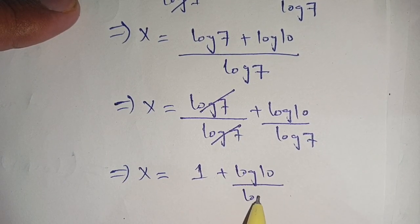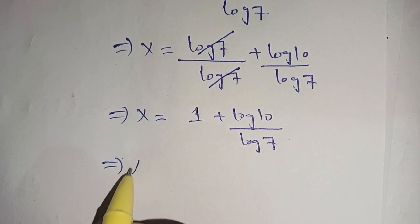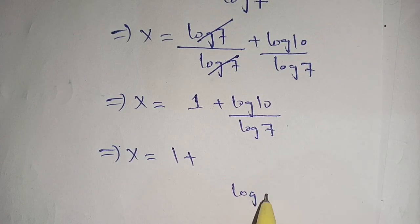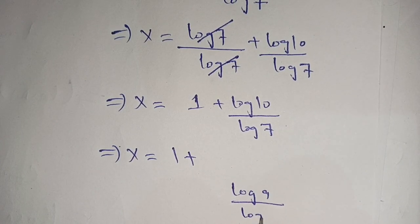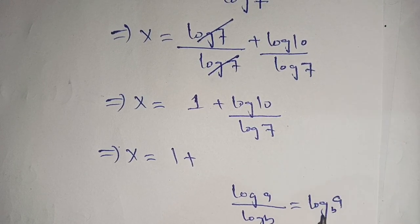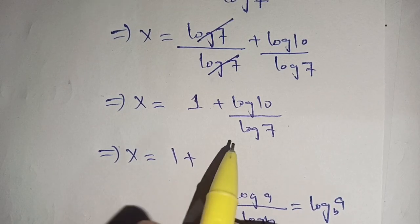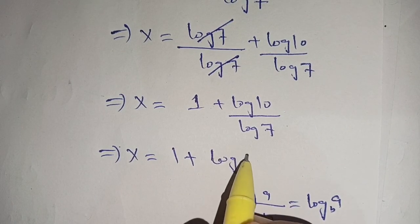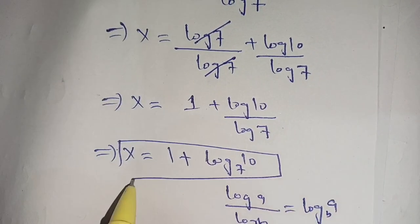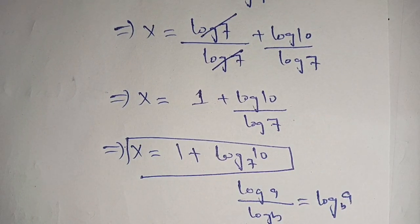Using the change-of-base identity log(a)/log(b) = log base b of a, we get x = 1 + log base 7 of 10. If you're new here, make sure to subscribe to our channel for more informative videos. See you in the next video — till then, bye!